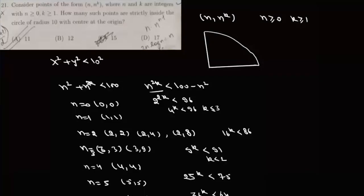In the next question, consider points of the form (n, n^k) where n is greater than or equal to 0 and k is greater than or equal to 1, inside the circle x^2 + y^2 = 100. So if the point lies inside this circle, then x^2 + y^2 should be less than 100. And x is n and y is n^k, so basically n^2 + n^(2k) should be less than 100, or n^(2k) should be less than 100 minus n^2.